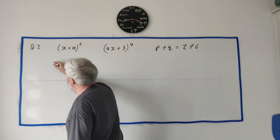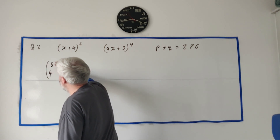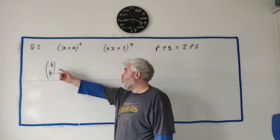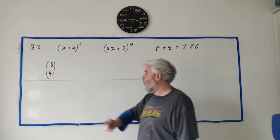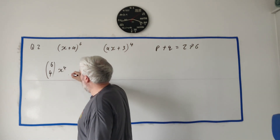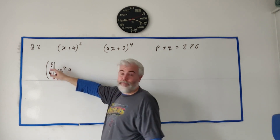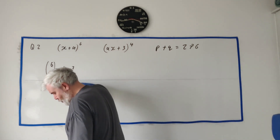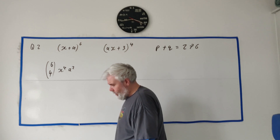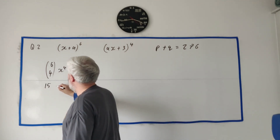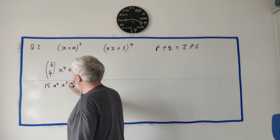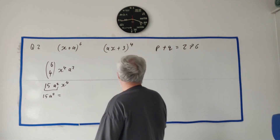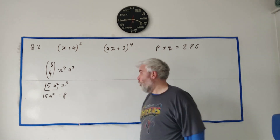For the first expression, (x + a)^6, we want the x to the power of 4 term, so we use 6 choose 4. That gives us 6C4 · x^4 · a^(6−4), which is a squared. 6 choose 4 is 15, so we get 15a²x^4. The coefficient of x^4 is therefore 15a², and that equals p.